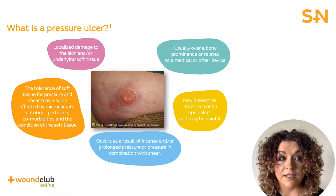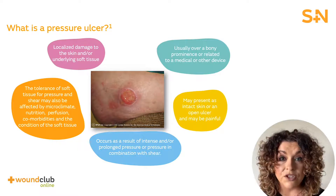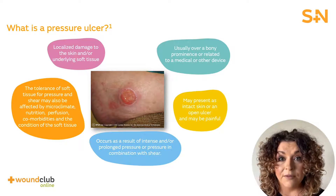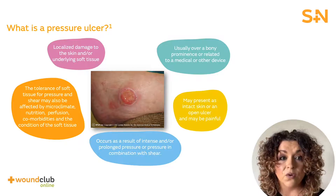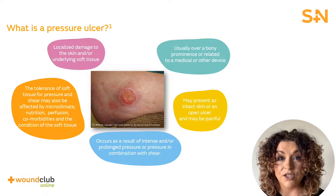Therefore, a pressure ulcer is defined as localised damage to the skin and or the underlying tissue. The ulcer is usually over a bony prominence, for example, heels or elbows. There may be associated pain with the ulcer. The overarching cause will be as a result of intense or prolonged pressure to the area and can be in combination with a shearing force.